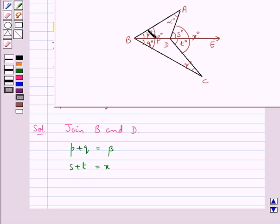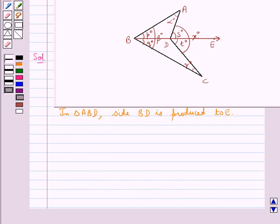Now if you look at triangle ABD, side BD is produced to E and S is the exterior angle of triangle ABD. Using the key idea, we would say S equals the sum of the two interior opposite angles which are alpha and P. So S equals alpha plus P. Let this be equation 1.